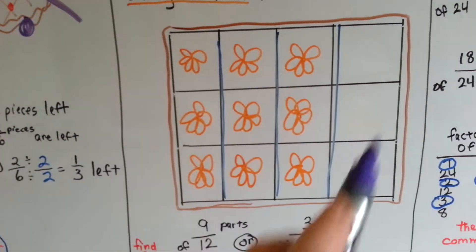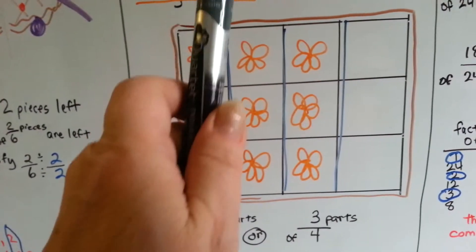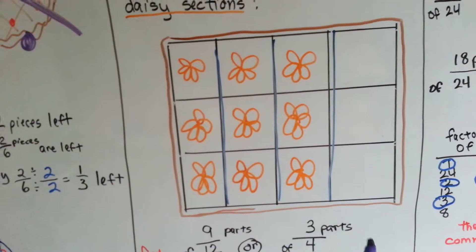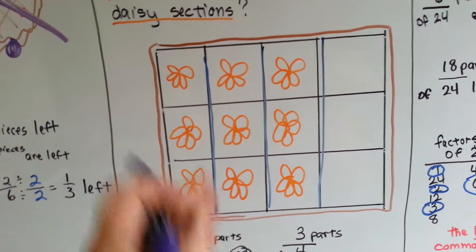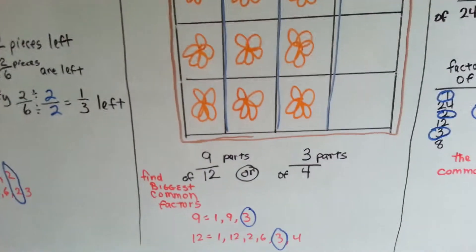It becomes three fourths. Because look, if it's not split into nine, we can split it into four parts by saying one part, two part, three part, four part. We just get rid of these cross lines here and it becomes four parts. And three of them are filled with daisies.